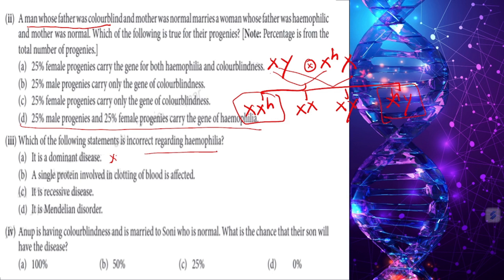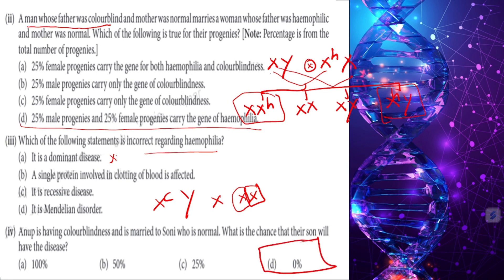Anup is color blind (X^c Y) and married Sony who is normal (X X). What is the chance that their son will have the disease? The son gets his X chromosome only from his mother, who is normal. So the chance is 0%.